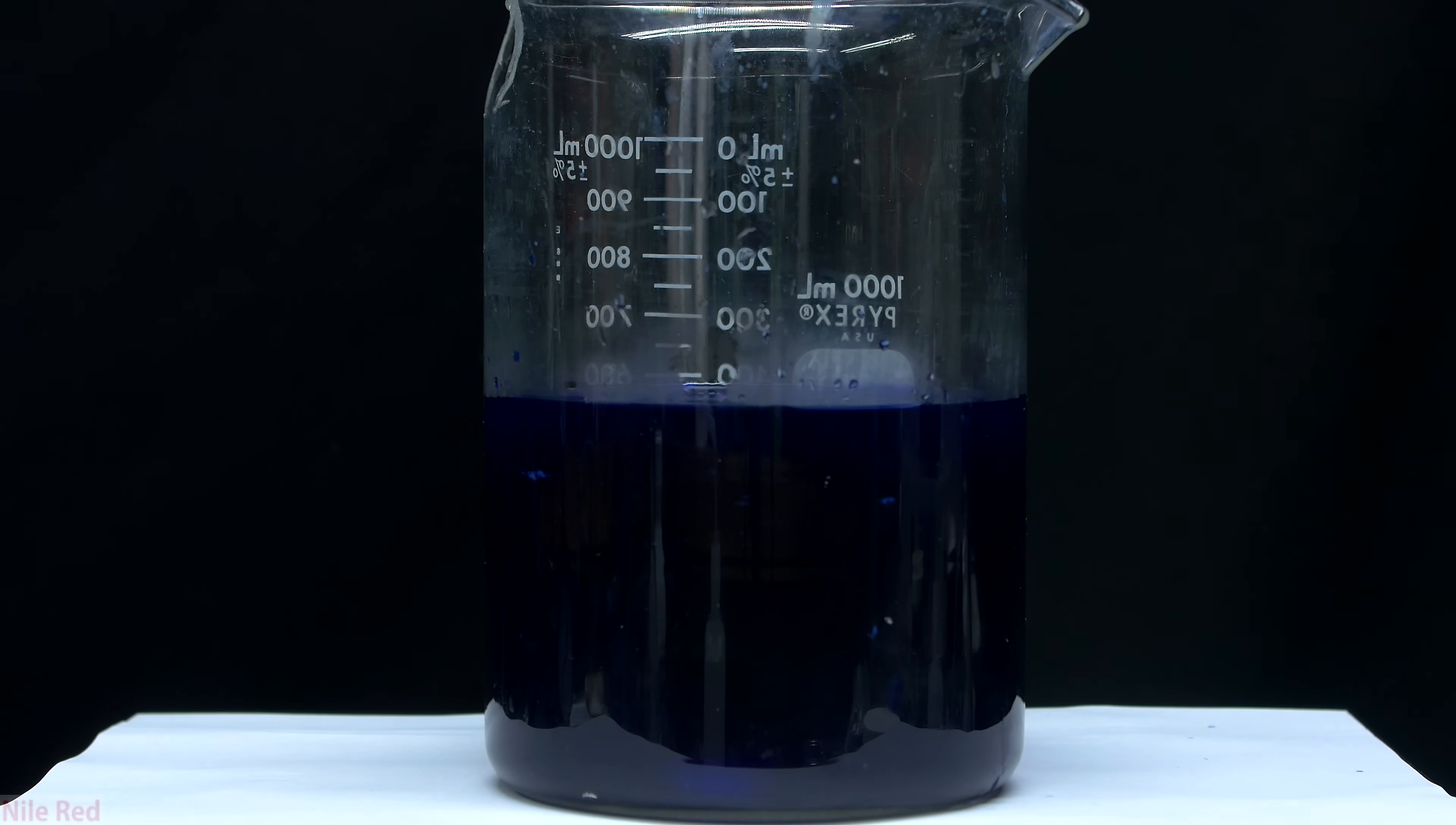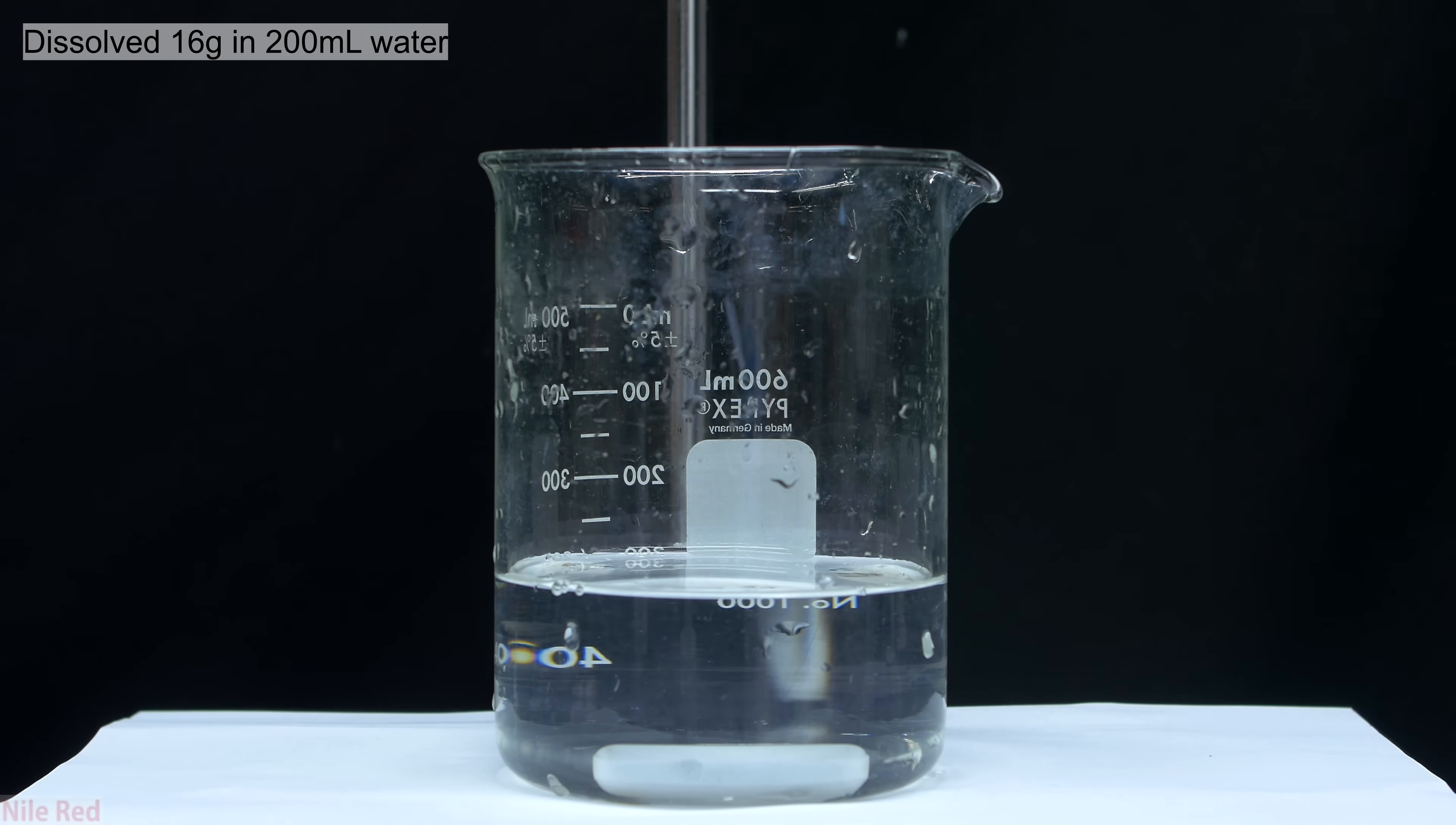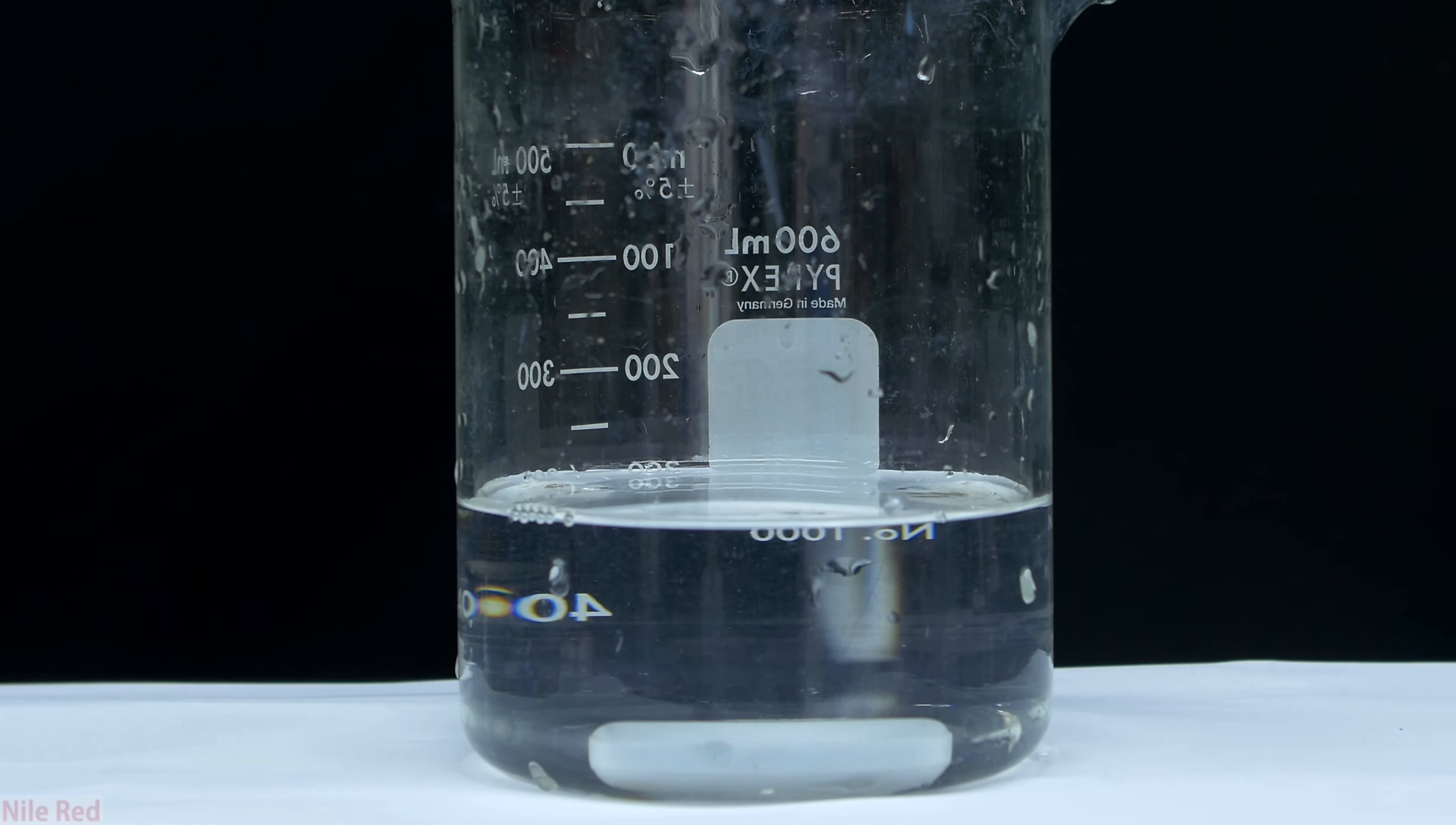Anyway, I let this stir for several minutes, and in the meantime I moved on to making a sodium hydroxide solution. The sodium hydroxide solution is pretty simple to make, and it just involves dissolving about 16 grams of sodium hydroxide in roughly 200 milliliters of distilled water. After stirring it for a few minutes, we should be left with a perfectly clear solution.